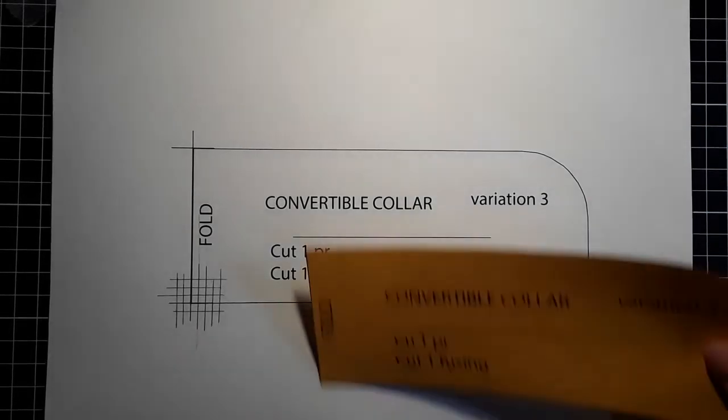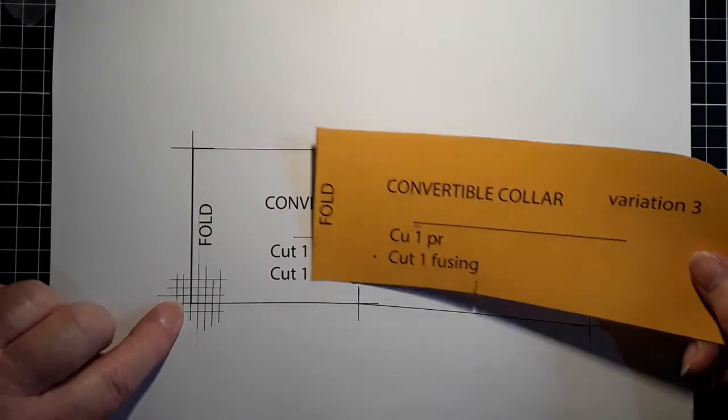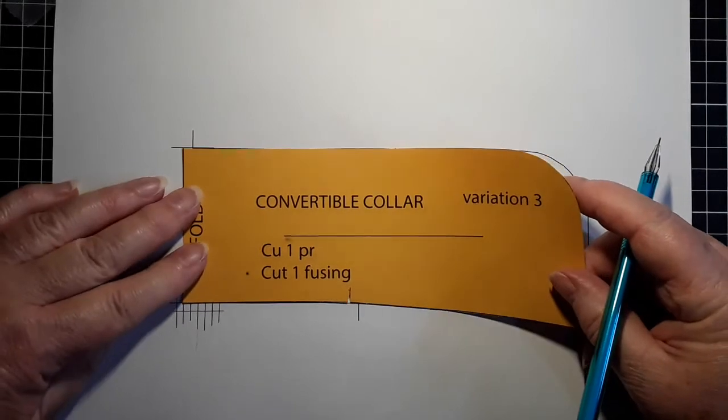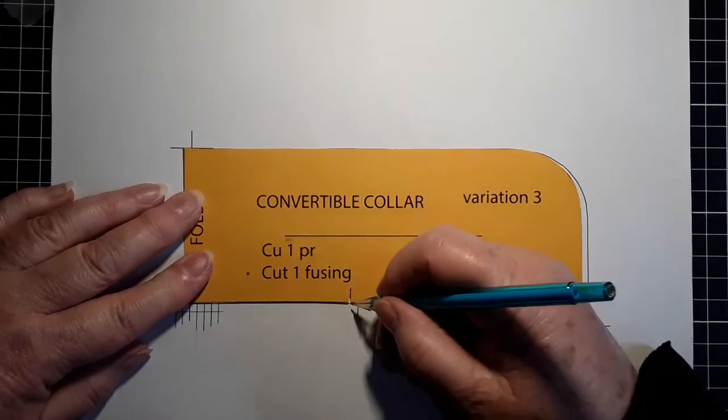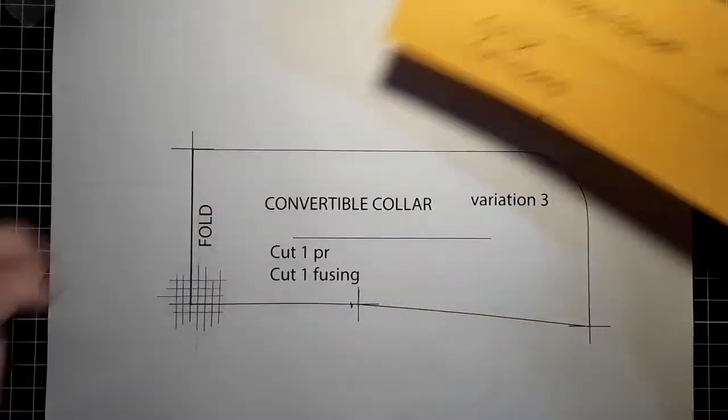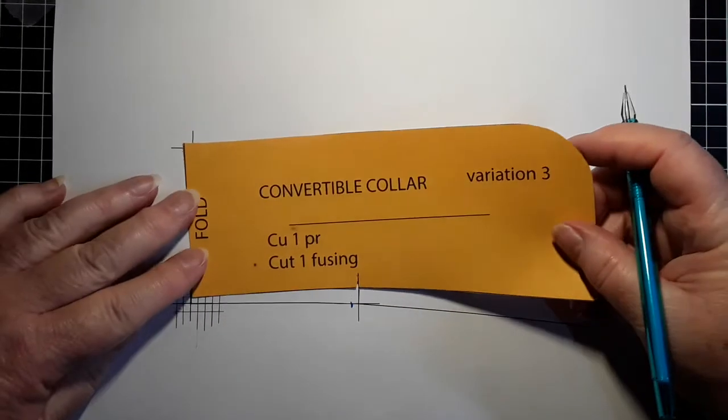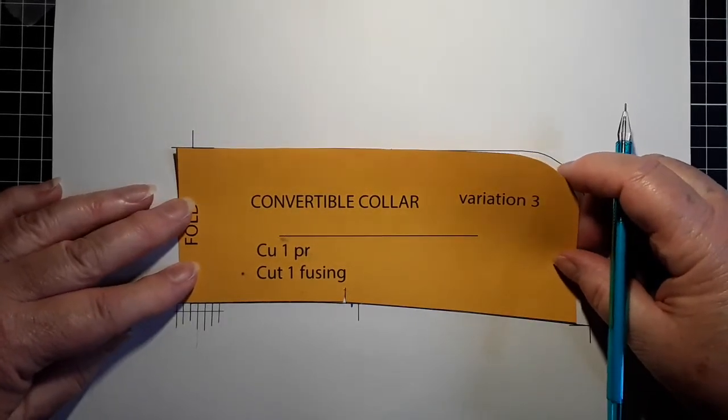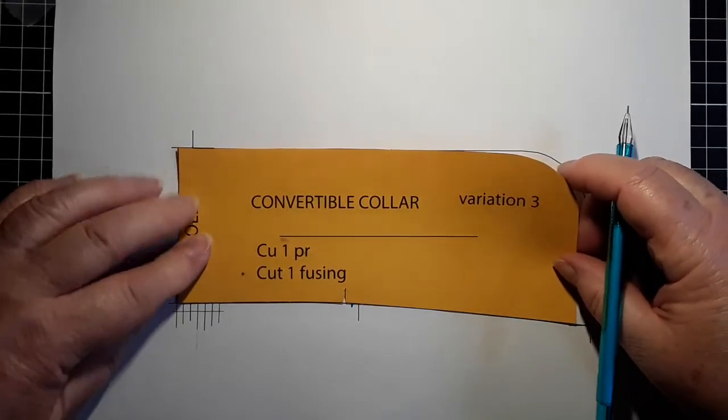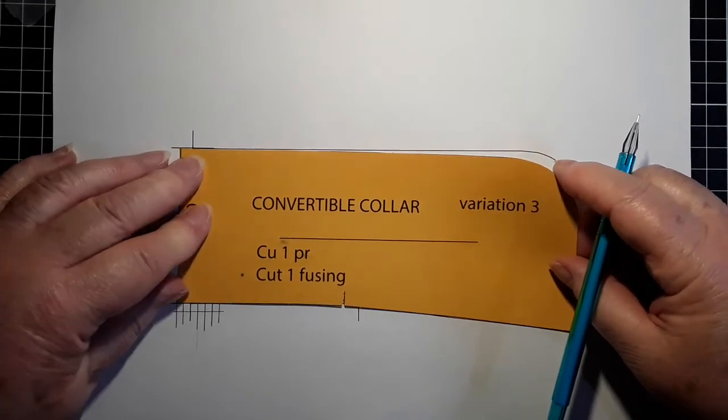So again, smallest size between here and here we're decreasing. So my position for the notch is moving three millimeters. Then for the center front, the total distance is six millimeters.